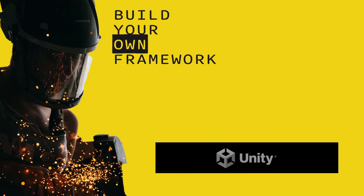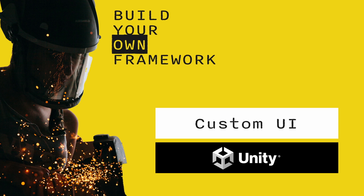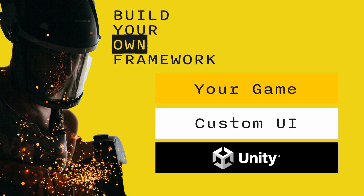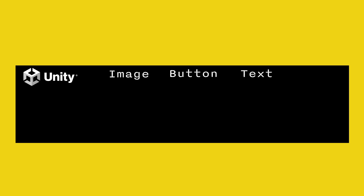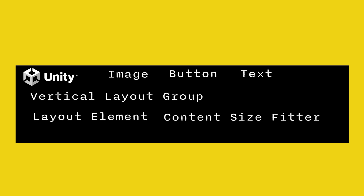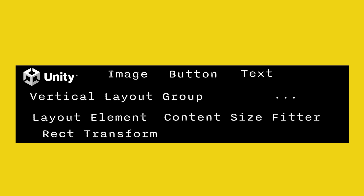Instead, I believe that you should be building your own UI framework. This means that you create a layer on top of Unity's UI system and then use that layer in your actual game to build more complex UIs. Let me show you how it looks, and then we're going to implement one version of that. Unity gives us components like Image, Button, Text, as well as components for controlling the layout like Vertical Layout Group, Layout Element, Content Size Fitter, and more.